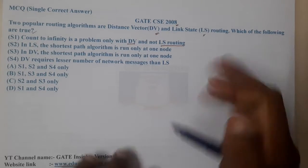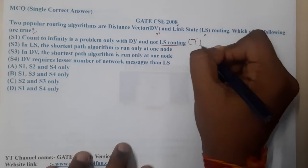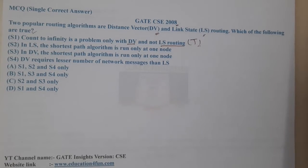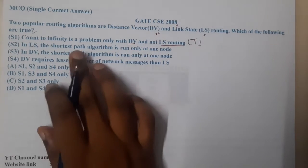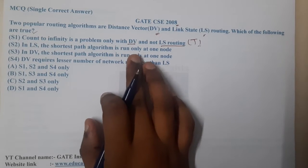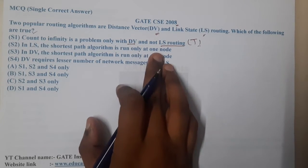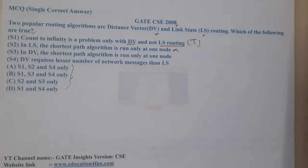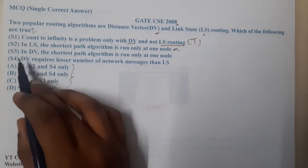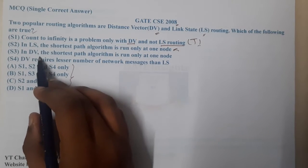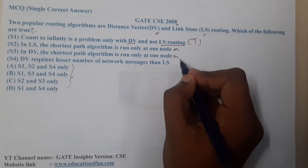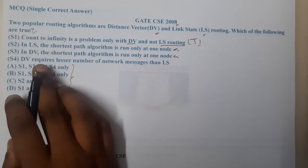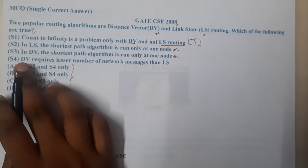Now let's go through S2. S2 says that in Link State routing, the shortest path is run only at one node. I did not get the exact idea, so let's keep it aside for now. Let's go through the next option - in Distance Vector routing, the same concept. Let's keep these two things aside and move to S4.